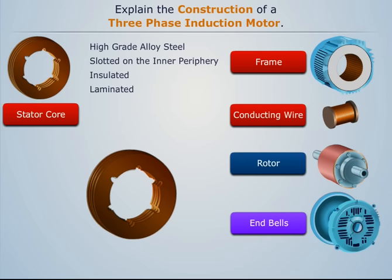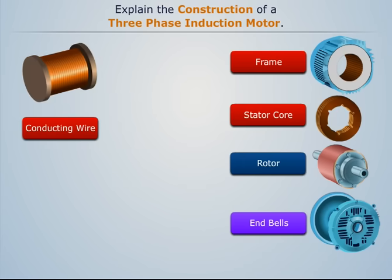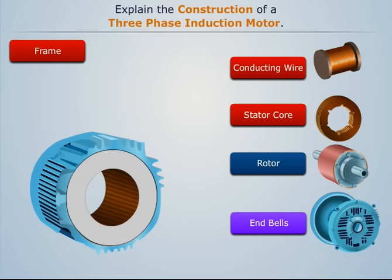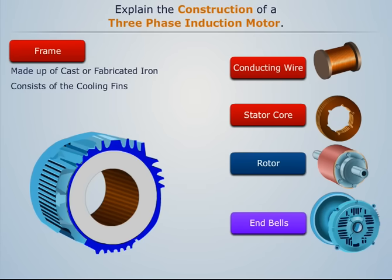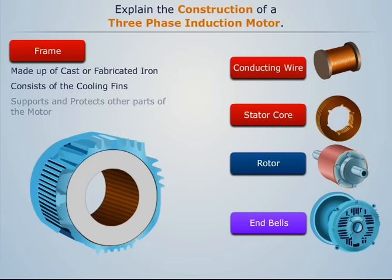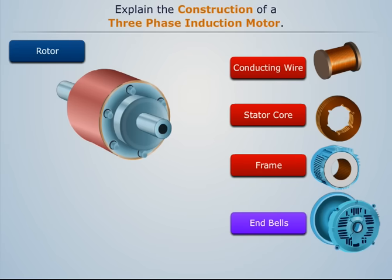The rings are then laminated to form the core. The conducting wire is made up of copper wire and is used to form the stator coil. The frame is made up of close-grained alloy cast or fabricated iron. Its outer surface consists of cooling fins to increase the heat dissipating area without increasing the overall diameter, giving support and protection to the other parts of the motor.